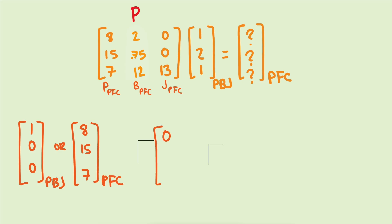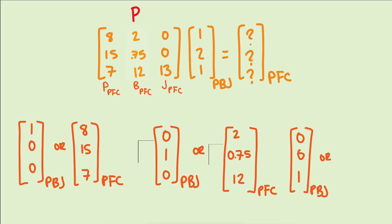This pattern continues. The second column represents one serving of bread, and we can write that in both bases. It would be 0, 1, 0 in the P-B-J basis, but 2, 3 quarters, 12 in the P-F-C basis. Similarly with jam, 0, 0, 1 is equivalent to 0, 0, 13 in the different basis.